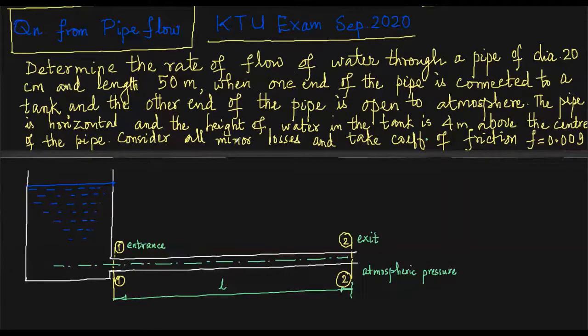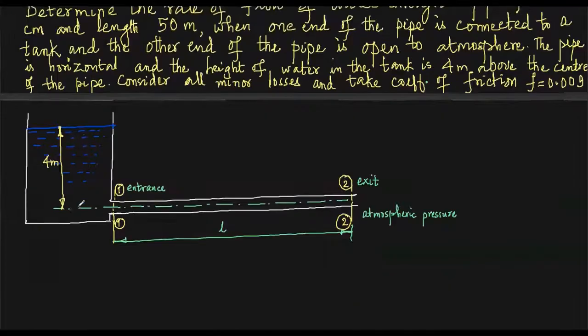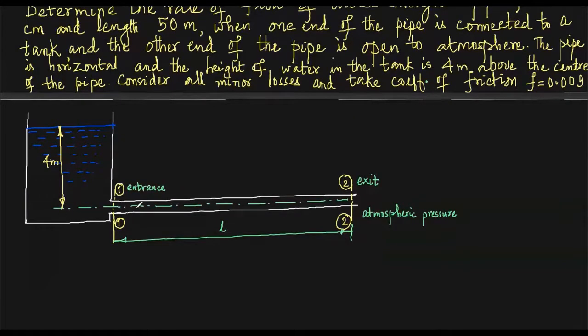In the question, you have a tank and a horizontal pipe. One end is connected to the tank and the other end is open to the atmosphere. The inlet to the pipe I marked as 1 and 2, and the liquid level in the tank is the free surface water level here, four meters above the centerline of the pipeline. Pipeline length L is equal to 50 meters and the diameter D is equal to 20 centimeters.